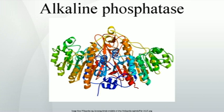In gram-negative bacteria, alkaline phosphatase is located in the periplasmic space, external to the cell membrane. Since this space is much more subject to environmental variation than the actual interior of the cell, bacterial alkaline phosphatase is comparatively resistant to inactivation, denaturation, and degradation, and also has a higher rate of activity.